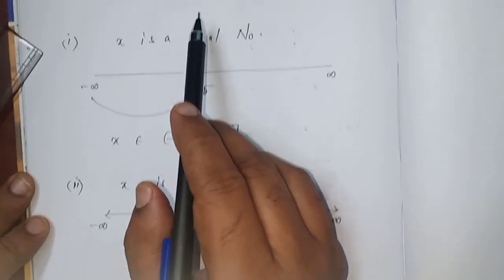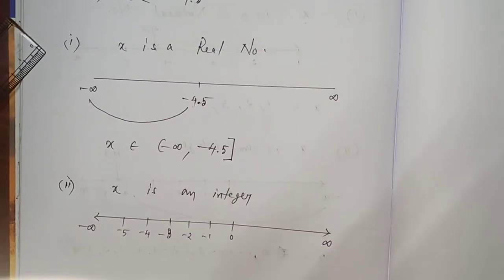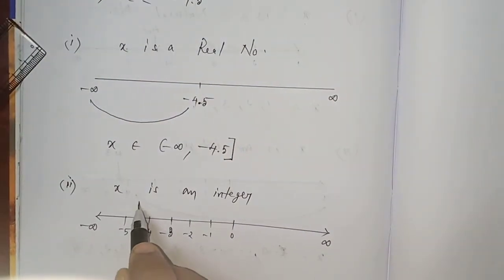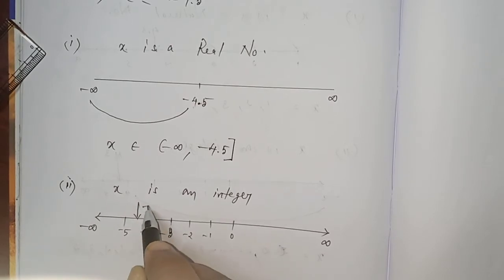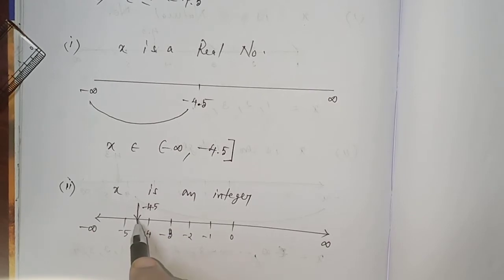Here we have -4.5. So, -4.5 in this region, in between -4 and -5, exactly at the middle of -4 and -5, here only.